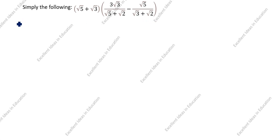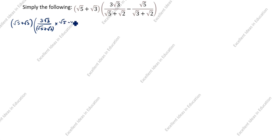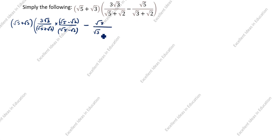So how will you simplify this? We have root 5 plus root 3, open the bracket, 3 root 3 divided by root 5 plus root 2. The denominator is root 5 plus root 2, so to rationalize we multiply by root 5 minus root 2 divided by root 5 minus root 2. For the second term, minus root 5 divided by root 3 plus root 2, we multiply by root 3 minus root 2 divided by root 3 minus root 2.